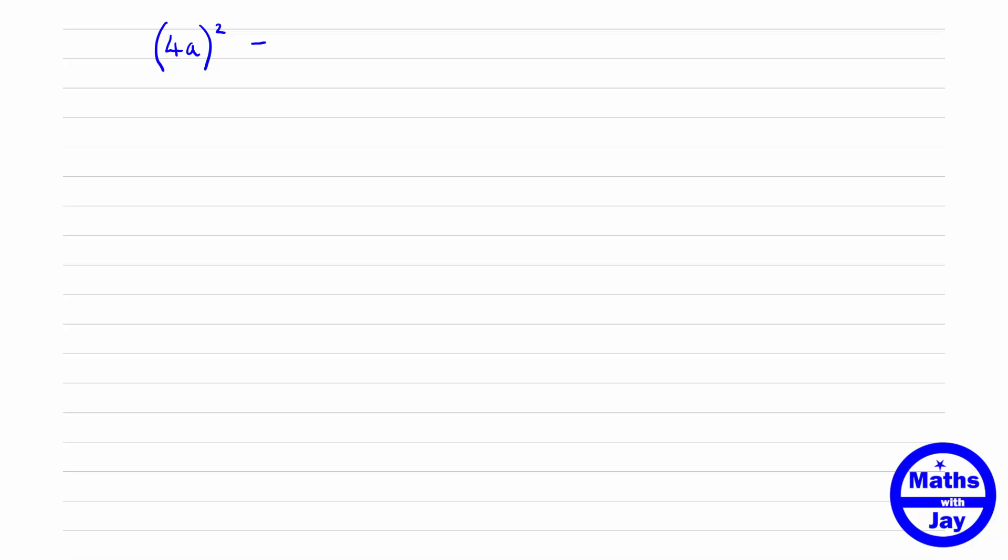It's really important to remember that not only is the a being squared, but the 4 is being squared as well. This really means, because of the brackets, 4 squared times a squared, so it equals 16a².